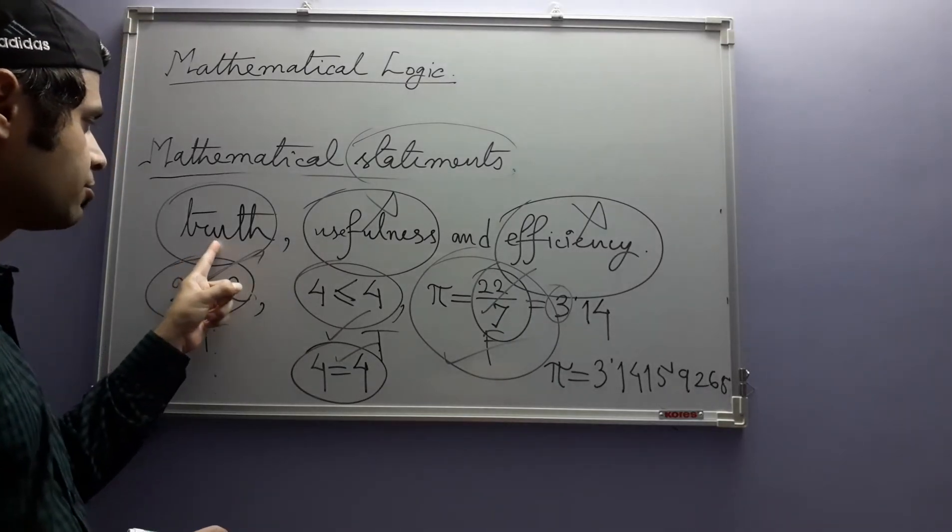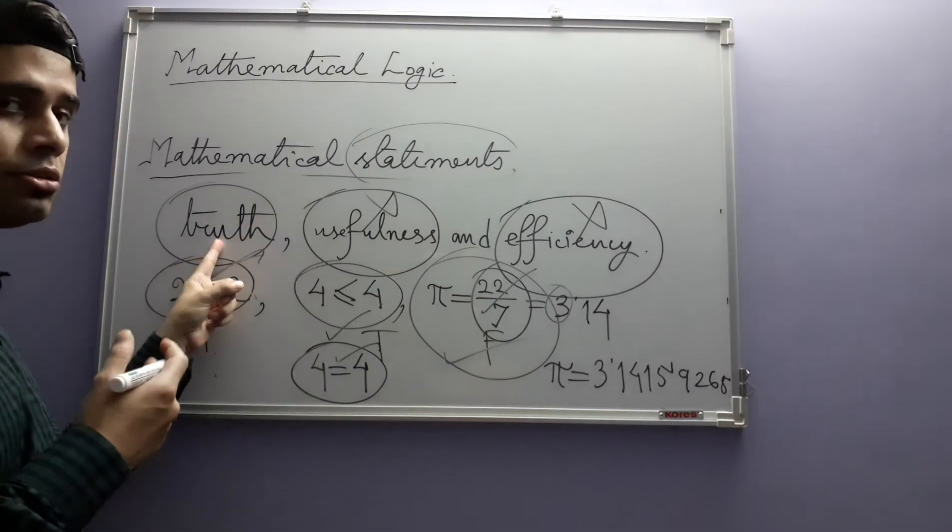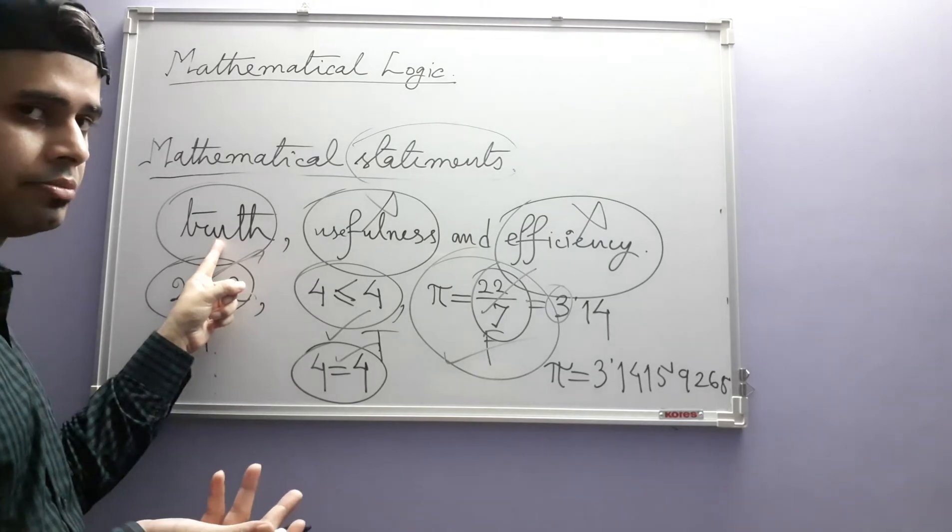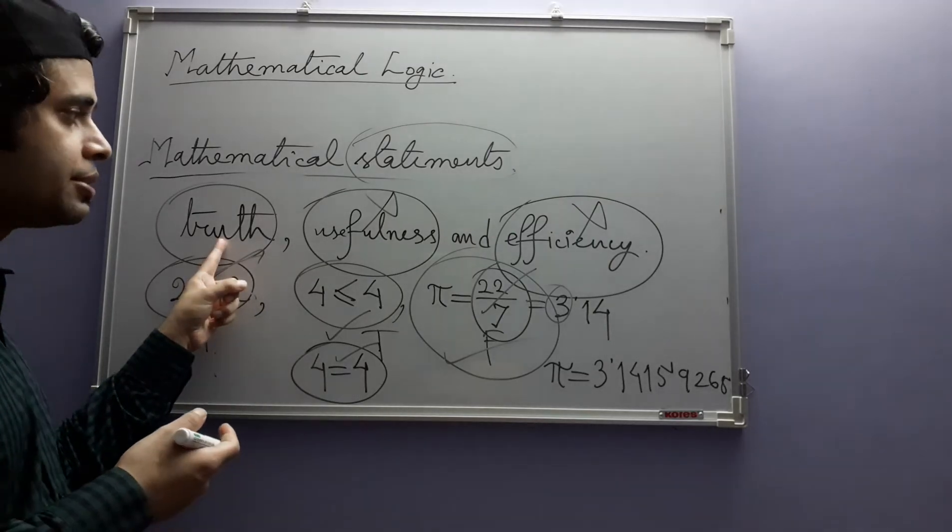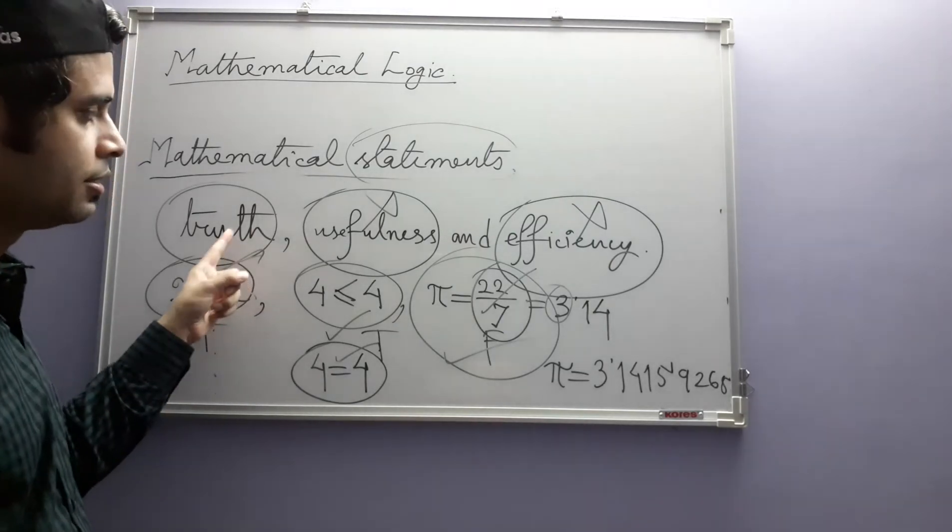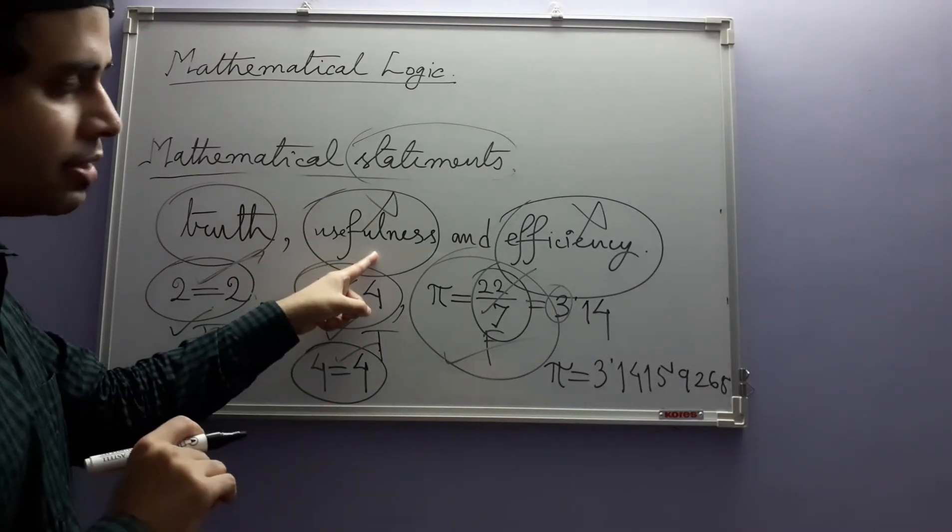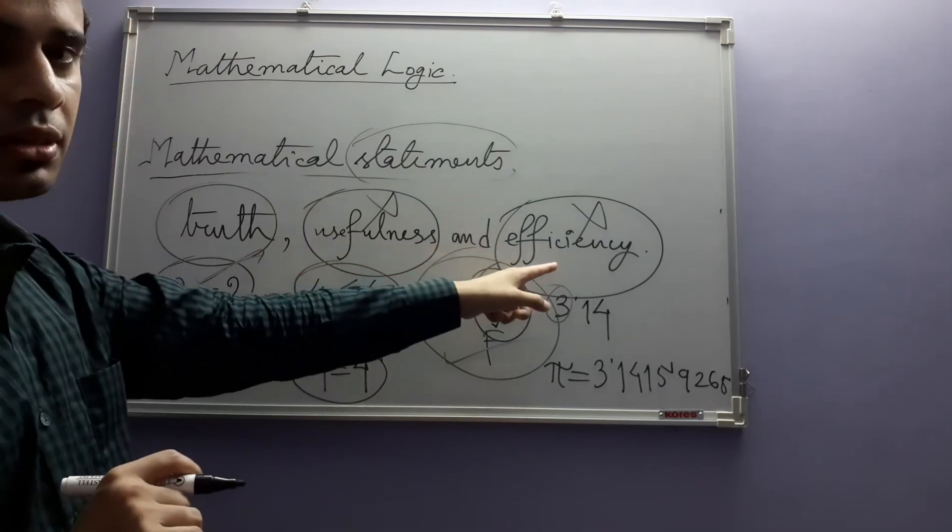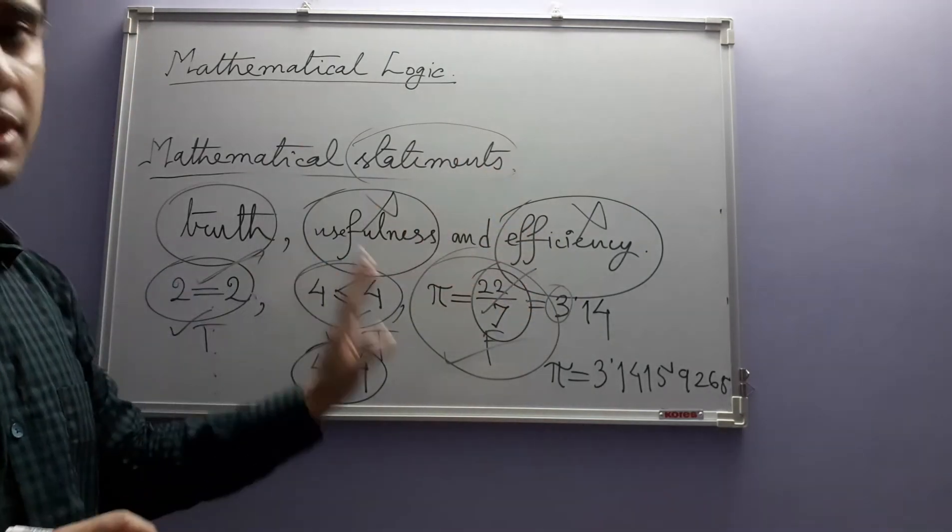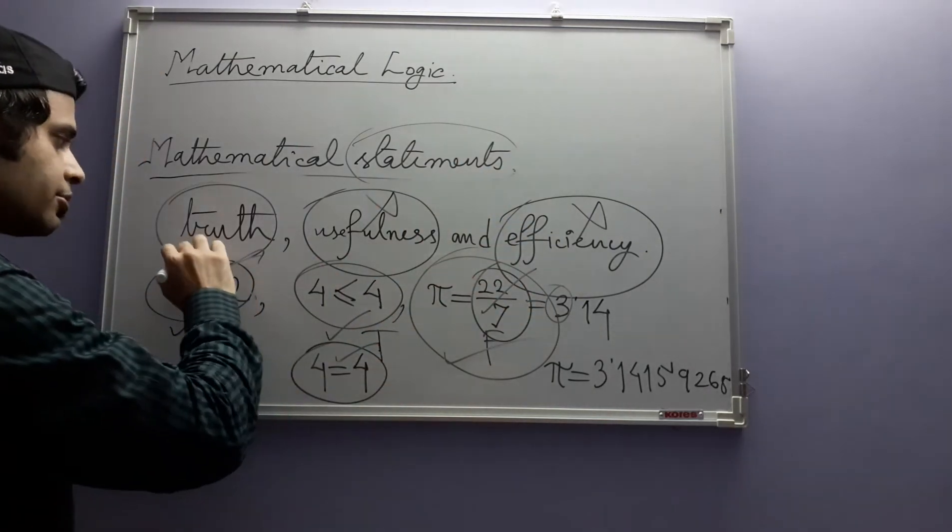Mathematics is about truth and we want to know what is true because it interests us. Usefulness is useful in applying mathematics and efficiency, of course, it is something else entirely. So we are concerned about truth.